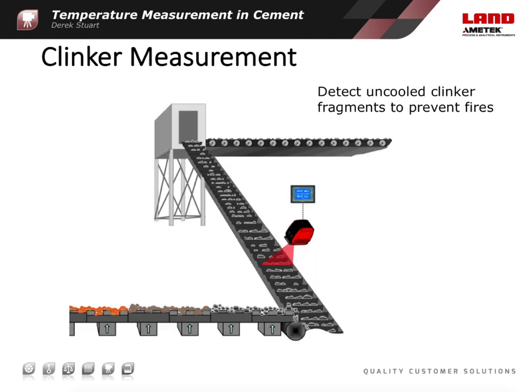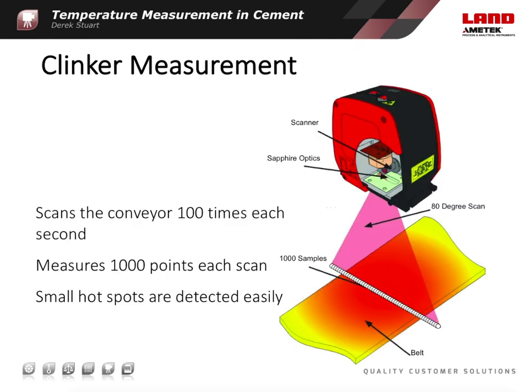This is an excellent application for the line scanner, as it can simply be mounted above the material to give continuous high resolution temperature measurements across its full width. The scanner can be mounted at the end of the clinker cooler, at the transfer point, or towards the beginning of the conveyor belt. The scanning mirror repeatedly scans across the scene, while the movement of the conveyor carries the material along in the second dimension. In this way, we are able to build up a two dimensional thermal image of the material as it passes by.